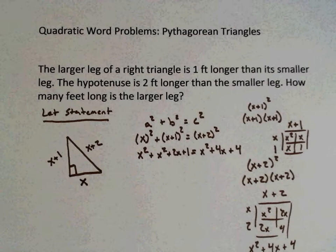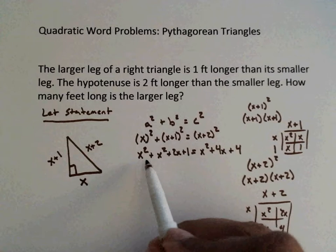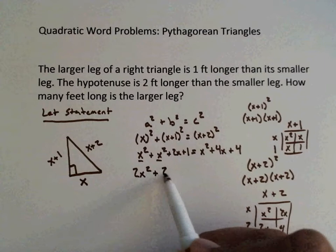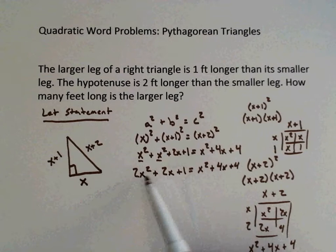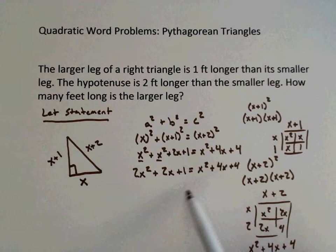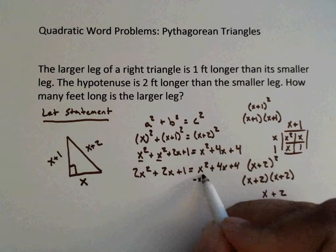So the next thing we want to do, we want to go ahead and try and combine like terms. So the only like terms I see is here and here. So we get 2X squared plus 2X plus 1 equals X squared plus 4X plus 4. As you can see, we have X squared terms. So the key when you have X squared terms, you want to move everything to one side.